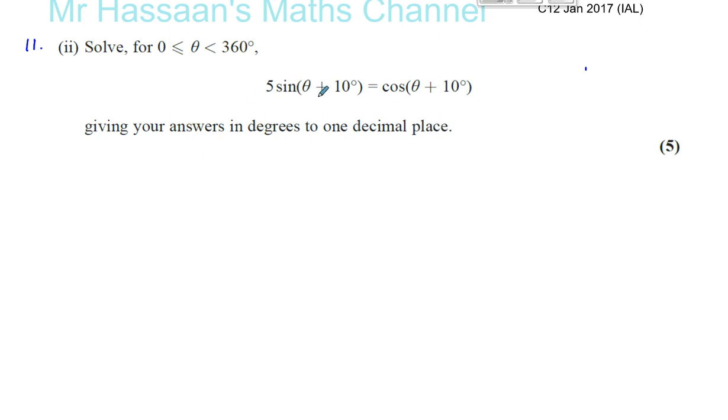To solve this equation when you've got sine and cosine together like this, one thing we can use is the fact that tan of an angle is the same as sine of that same angle divided by cosine of that same angle. As long as those angles are the same, the tan of that angle equals sine of that angle divided by cosine of that angle.